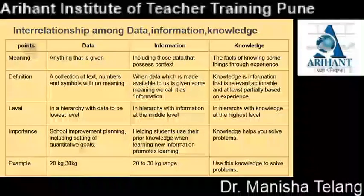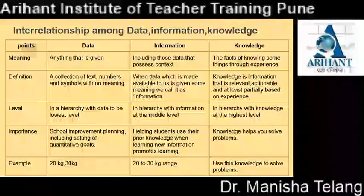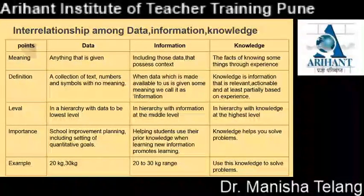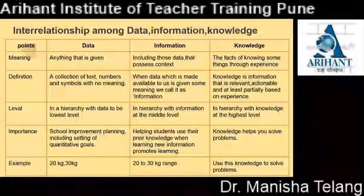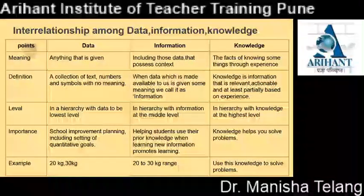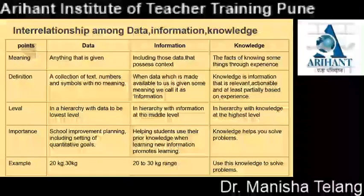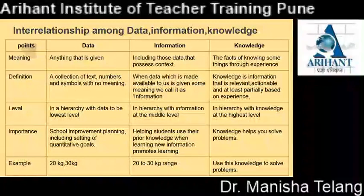Definition: data is defined as a collection of facts, numbers and symbols with no meaning. Definition of information: when data which is made available to us is given some meaning, we call it information. Definition of knowledge: knowledge is information that is relevant, actionable and at least partially based on experience.